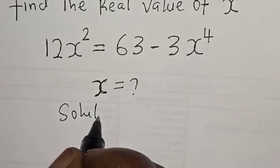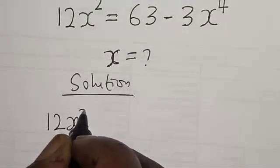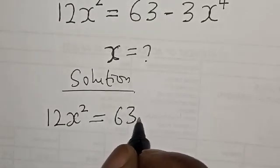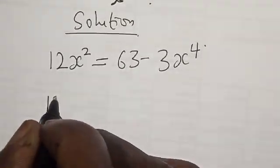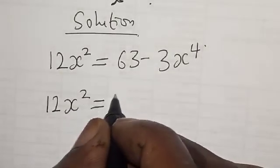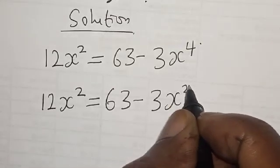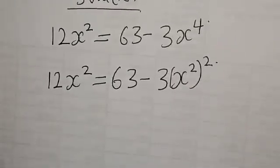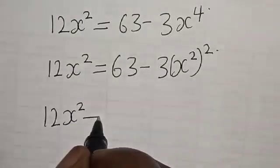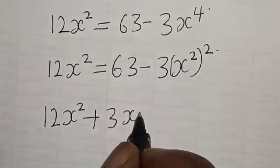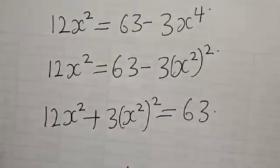Solution. We have the given equation: 12x squared is equal to 63 minus 3x raised to power 4. This is the same thing as 12x squared plus 3 into x squared squared is equal to 63. Let's bring the terms to one side.